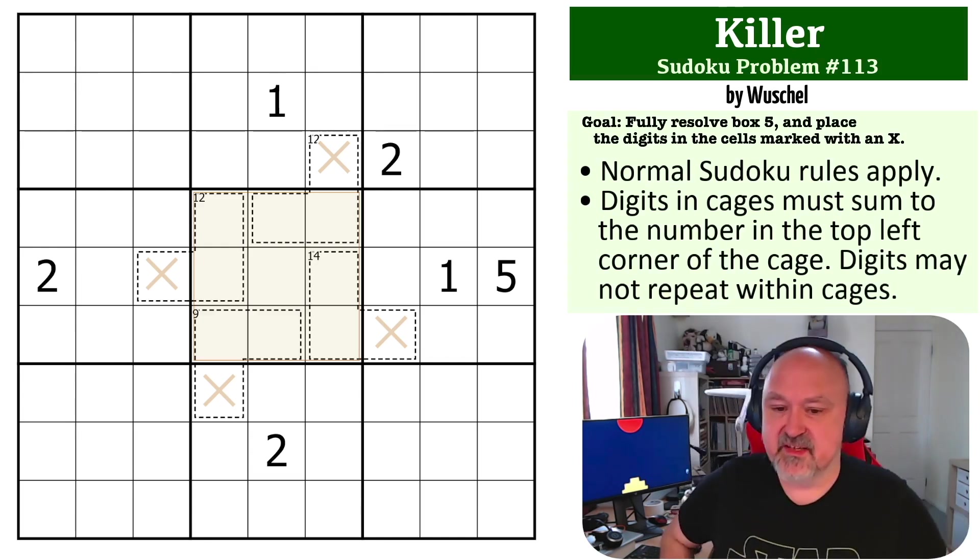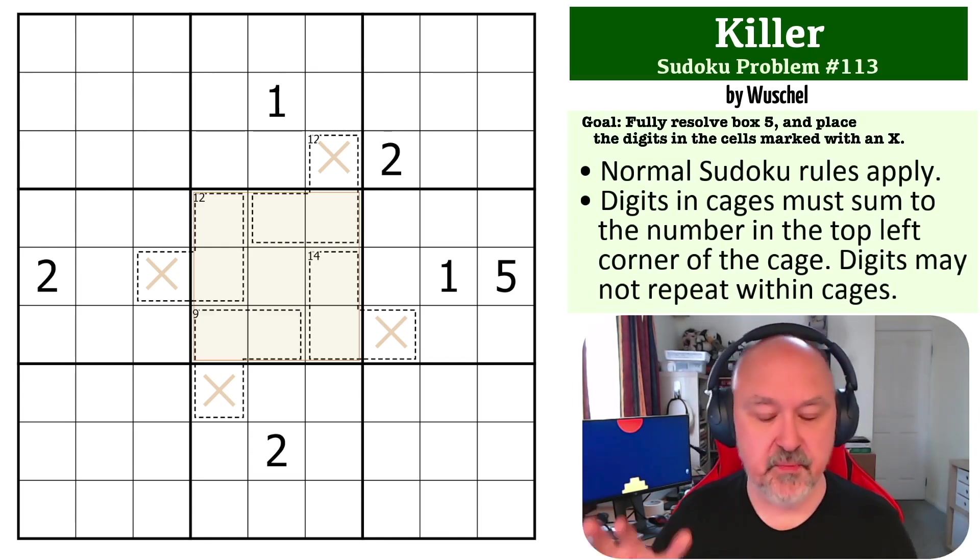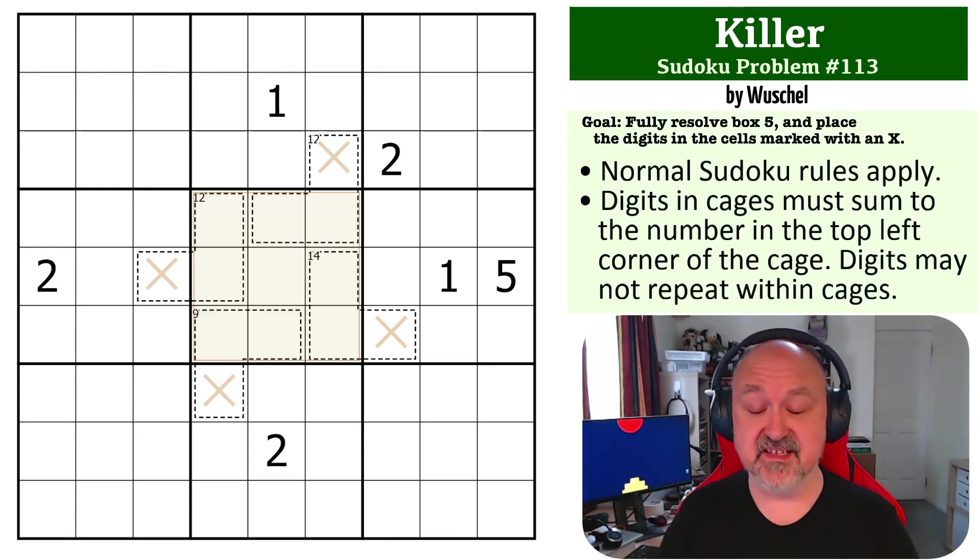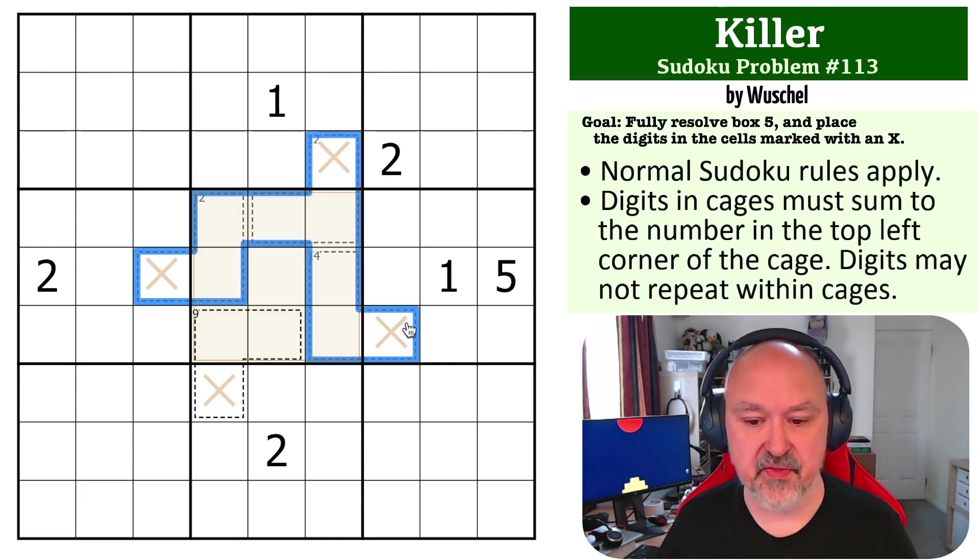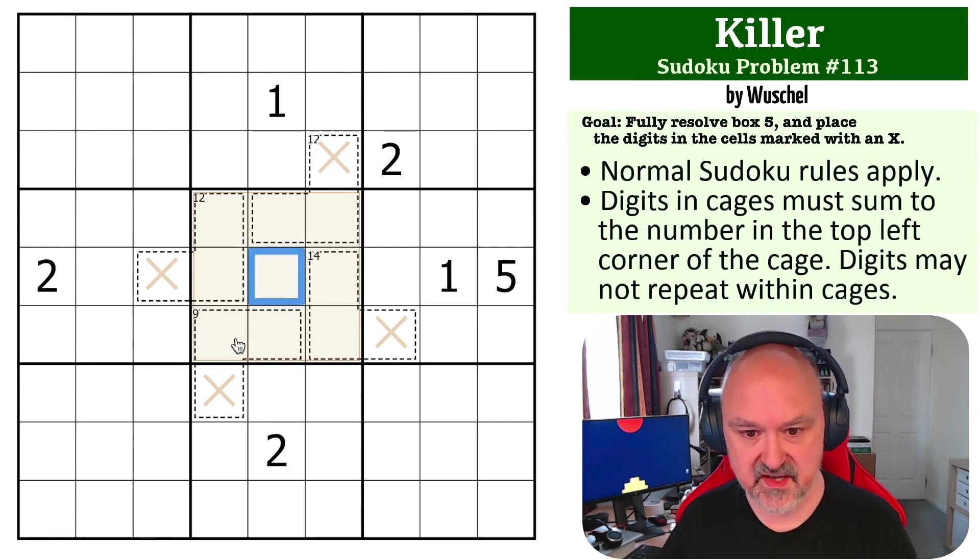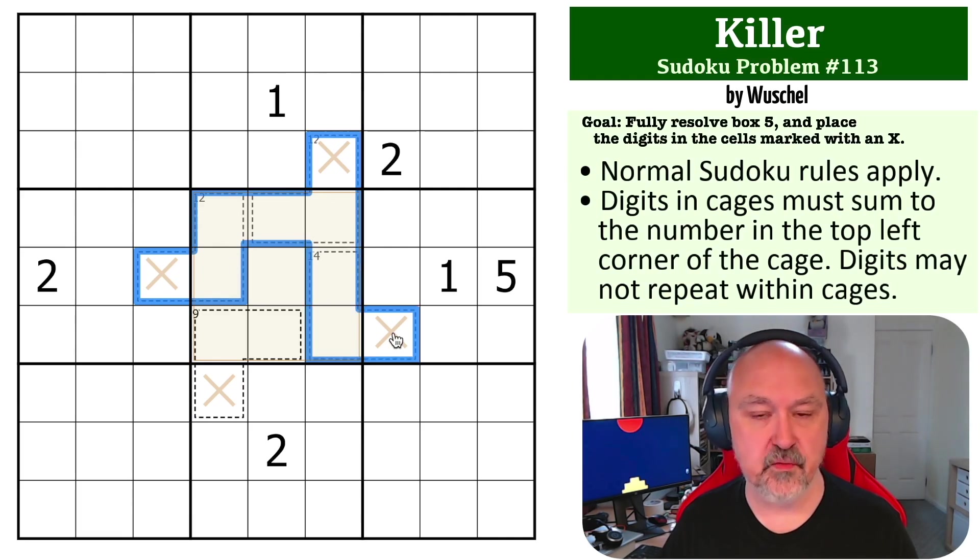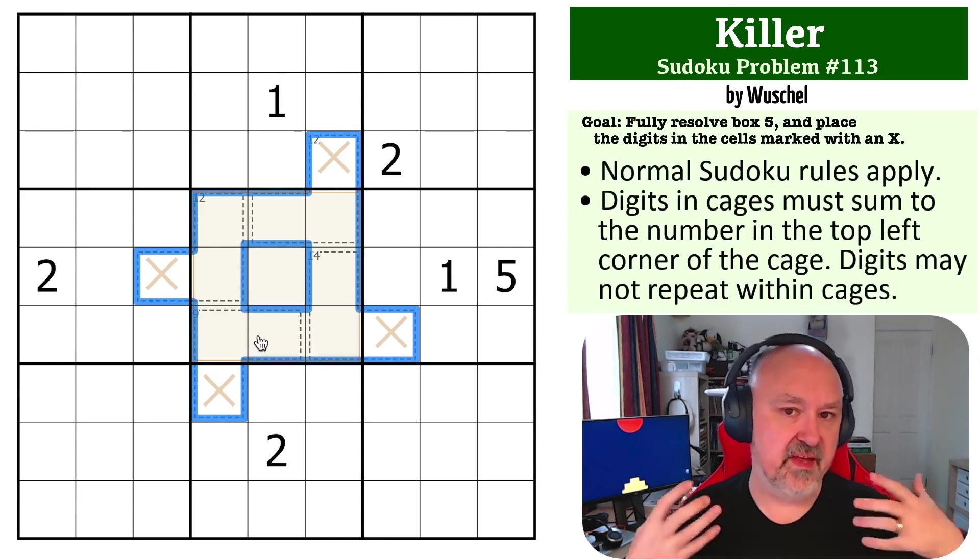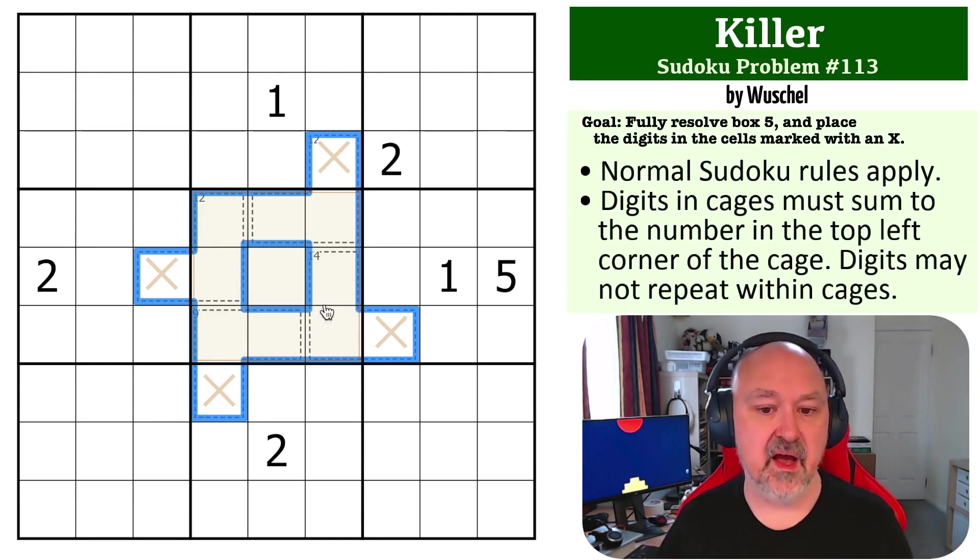Okay, so buckle up. This one is a bit of a journey. As I said, I've got some notes open. I'm going to try not to refer to them, but if I get stuck I will. The break into this one starts with looking at the math on these cages. There's a fair bit of pressure put on this central cell. The cages themselves sum to 12 plus 12, which is 24, plus 14, which is 38, plus 9, which is 47.